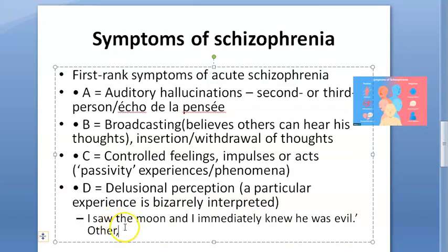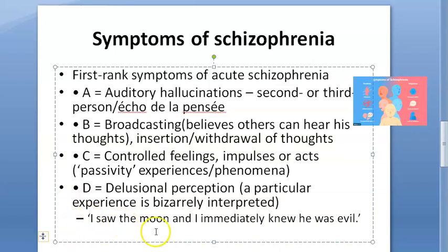So the textbook says 'I saw the moon and I immediately knew he was evil' is an example of delusional perception.